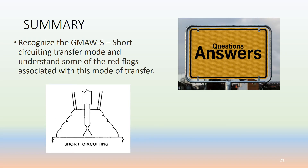Summary: we touched on a lot of information regarding gas metal arc welding short-circuiting transfer mode, trying to understand some of the red flags and nuances associated with this mode of transfer in both ASME Section 9 and AWS D1.1.